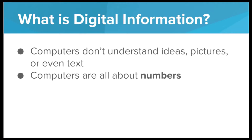They can move numbers from box A to box B. They can add numbers together really quickly, subtract numbers really quickly, and they can do this a million times per second. So if we want computers to be able to work with pictures and text and the type of information that's useful to humans, we need to be able to break this information down into numbers, because numbers are what are useful for computers.